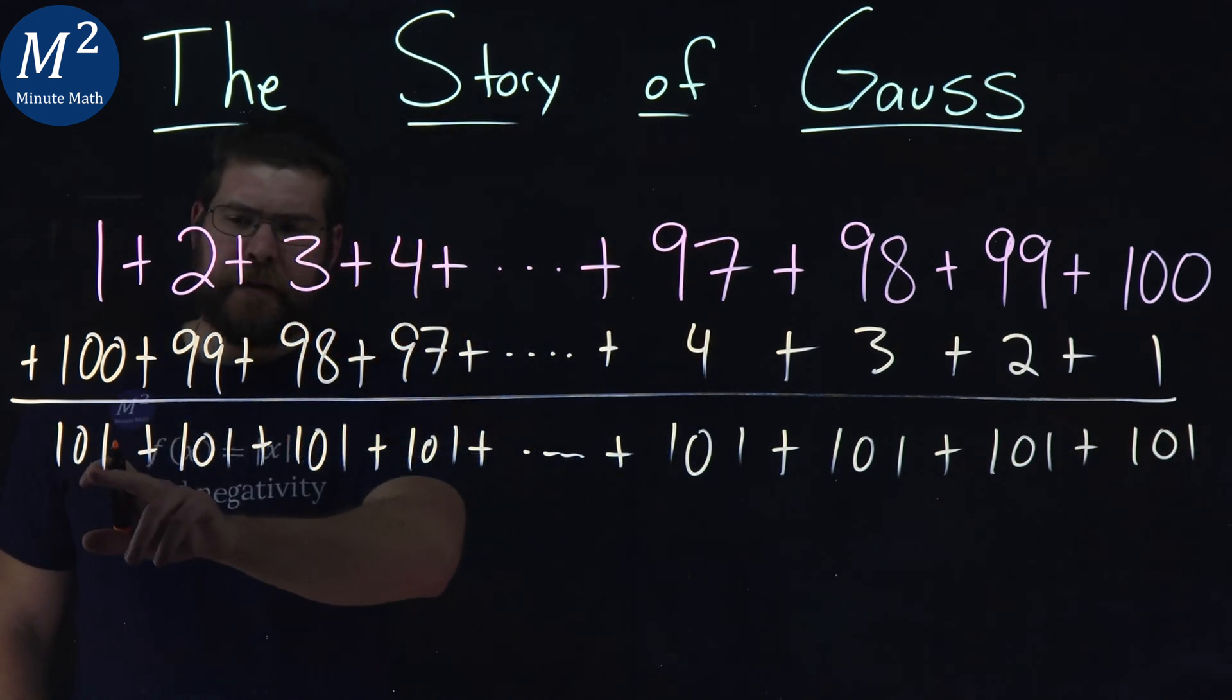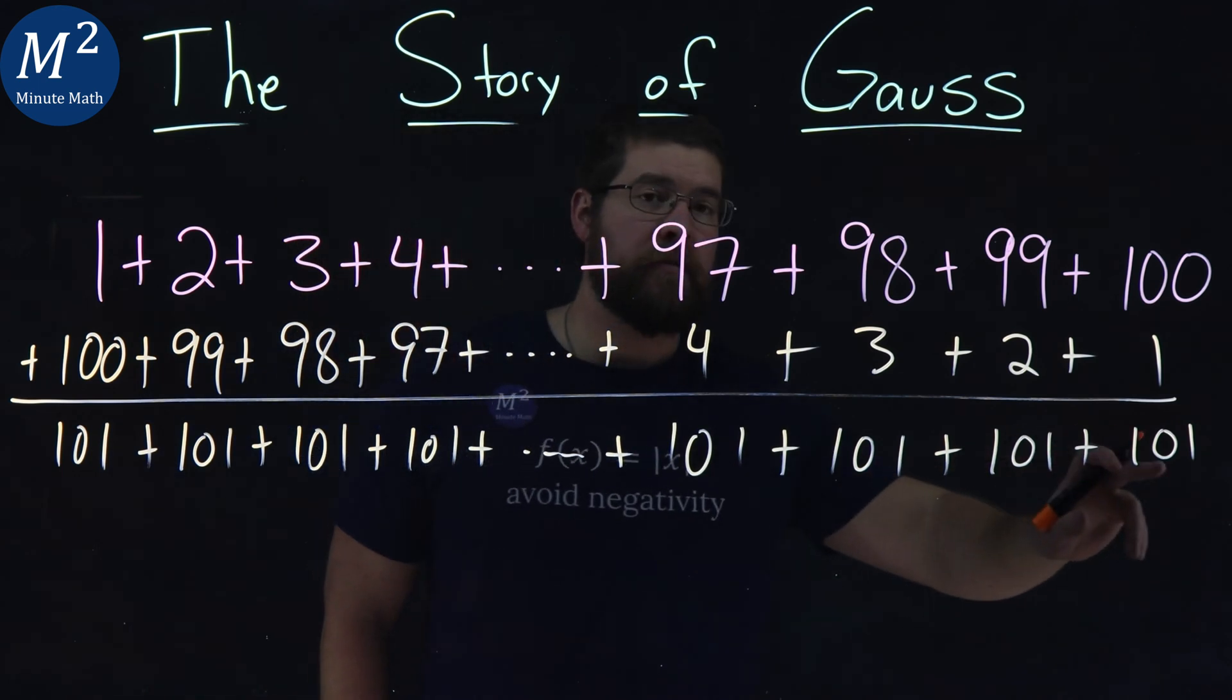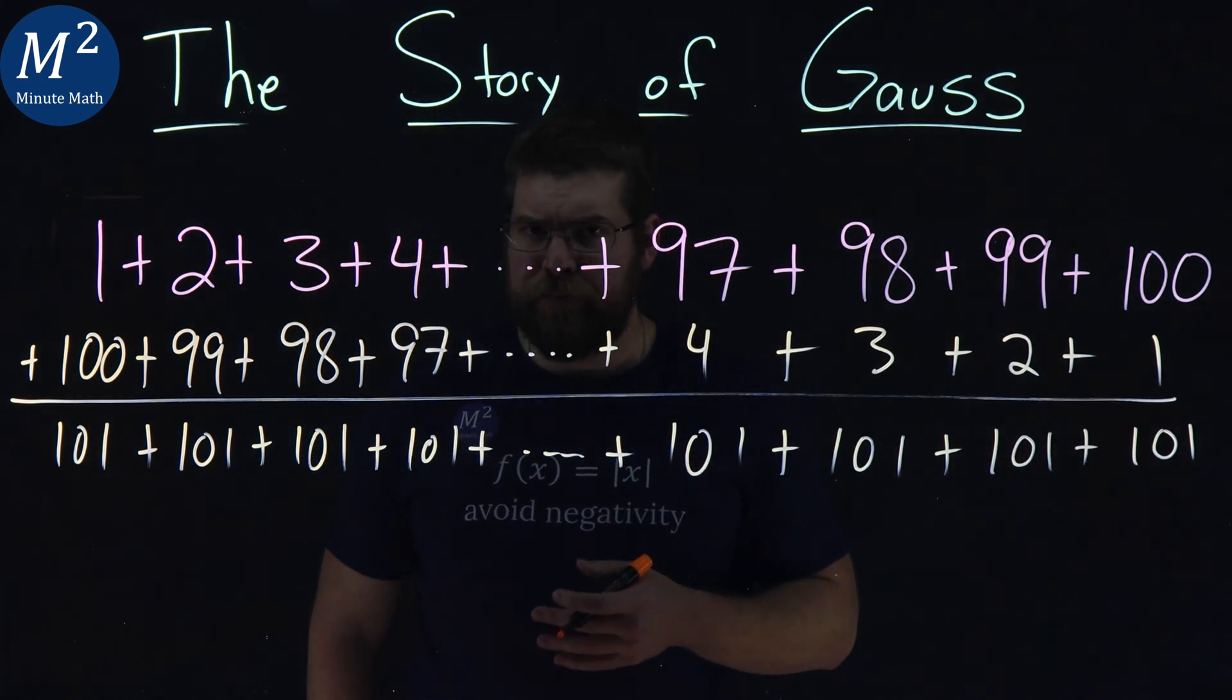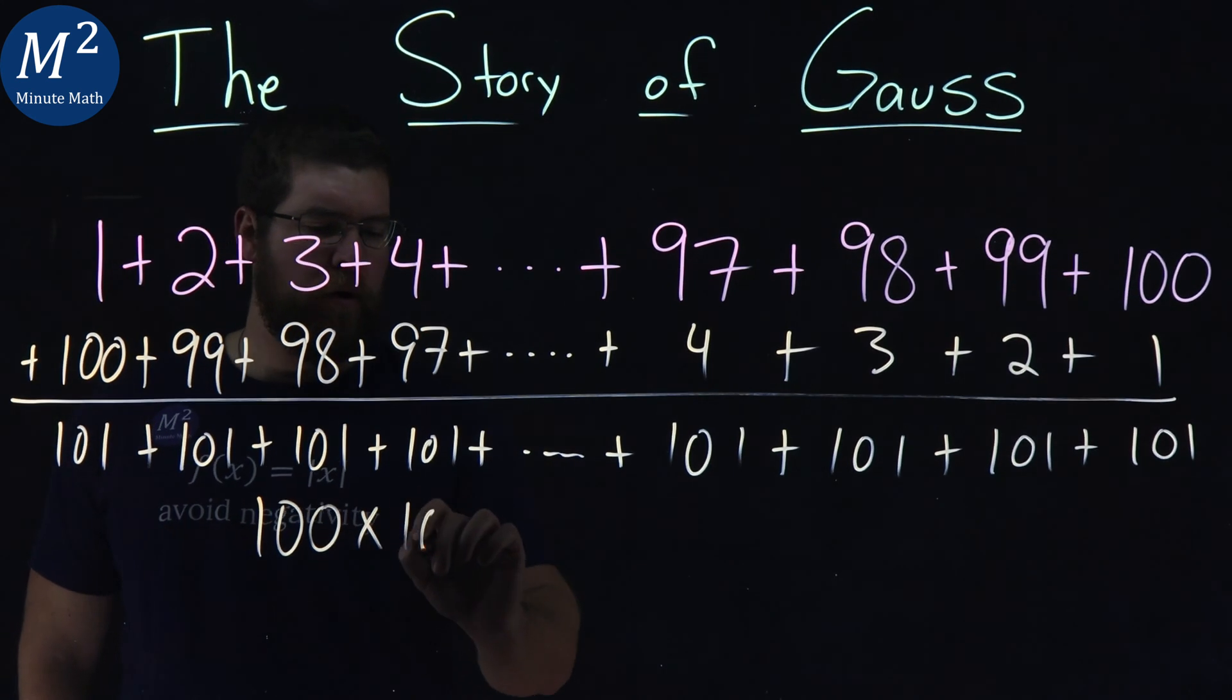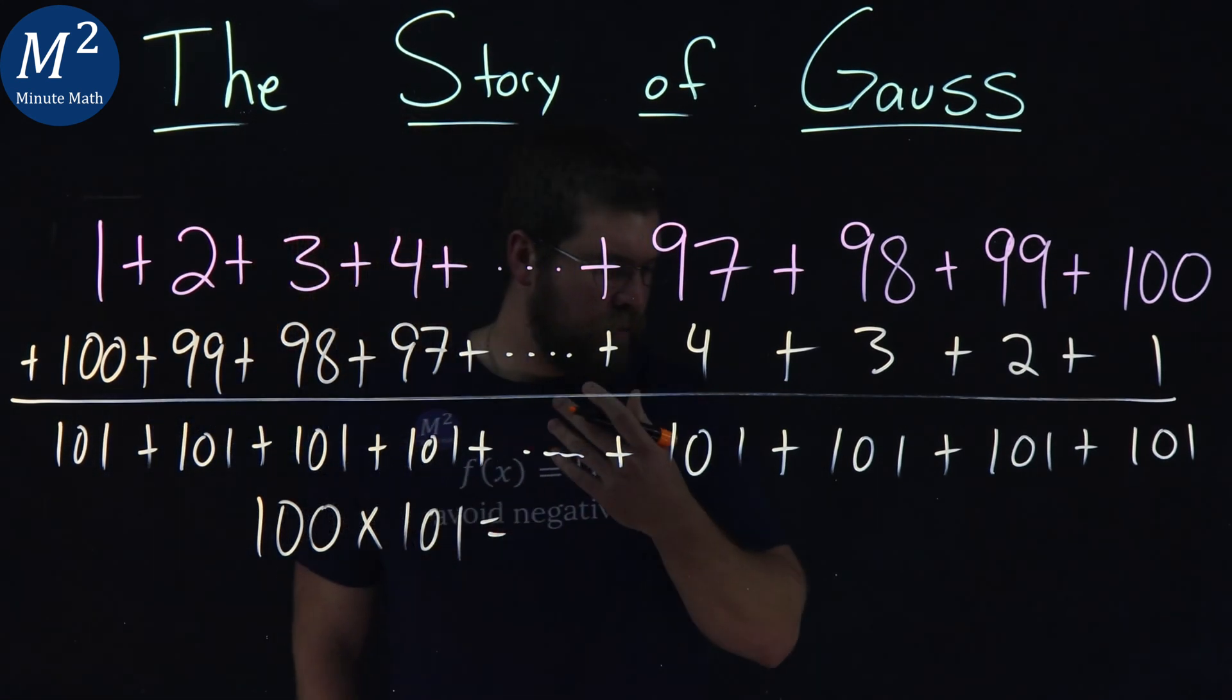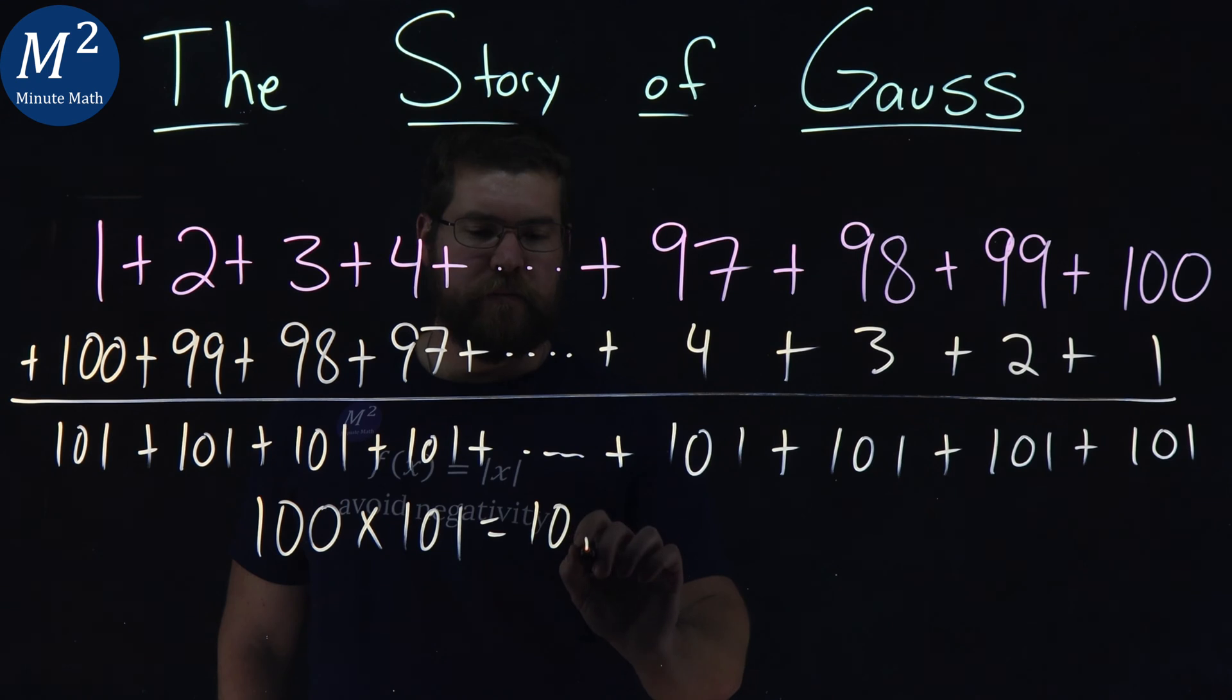And then he noticed, well, there's a hundred of these 101s. So he said, okay, what's 100 times 101? That's an easy problem to solve. 10,100.